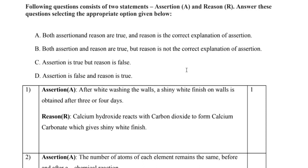Question 1: The assertion is — after whitewashing the walls, a shiny white finish on walls is obtained after 3 or 4 days. The reason is — calcium hydroxide reacts with carbon dioxide to form calcium carbonate, which gives a shiny white finish. That is why it takes 3 to 4 days to get the shiny finish. Both assertion and reason are correct, so A is the answer.